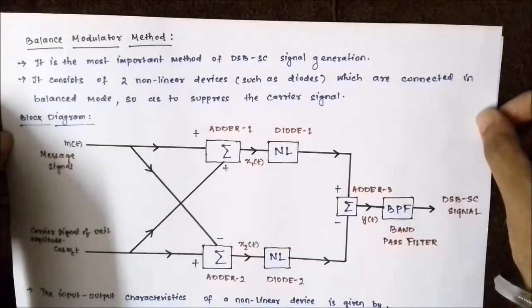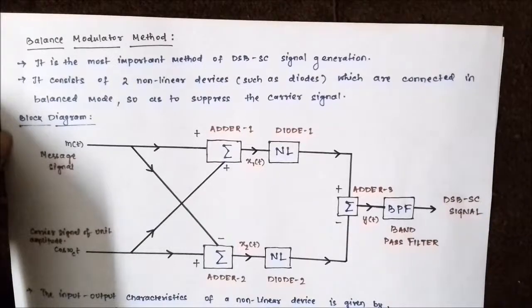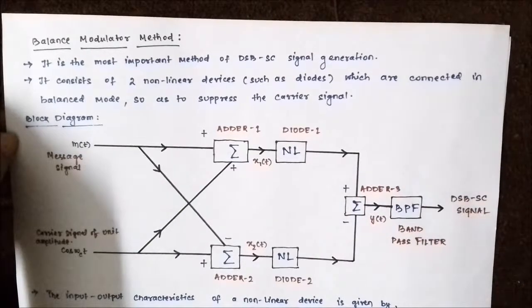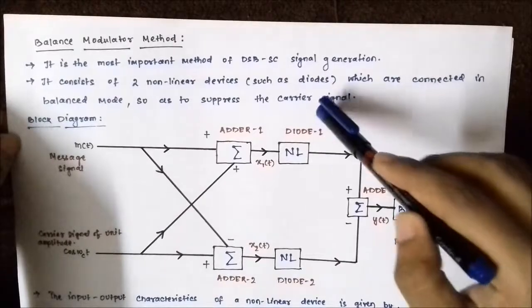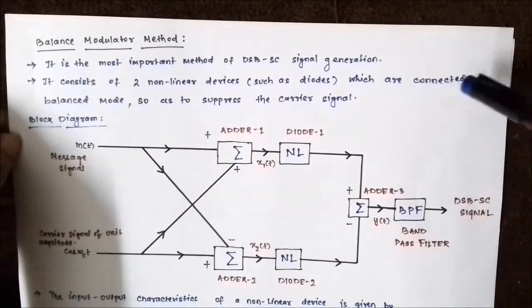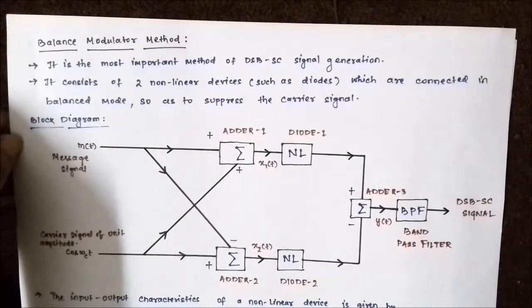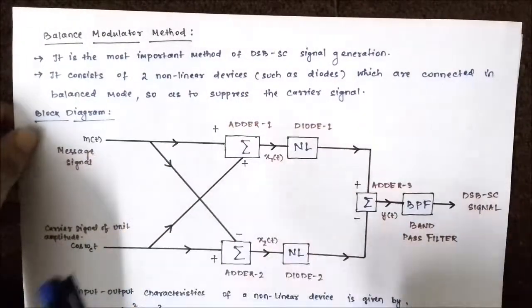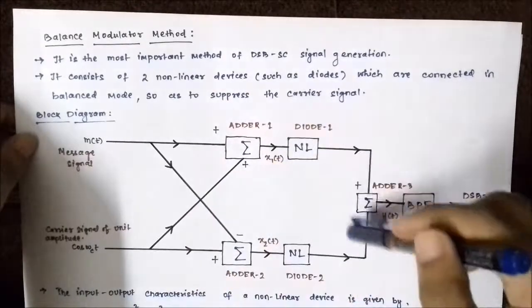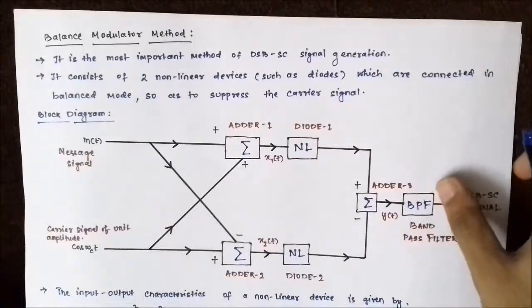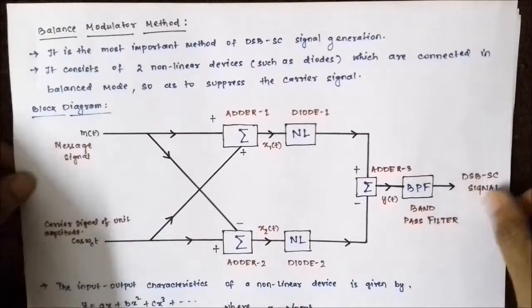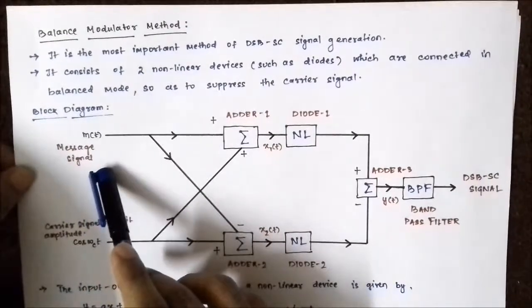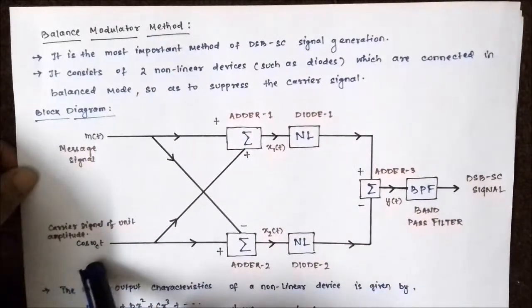The balanced modulator method is the most important method of DSBSC signal generation. It consists of nonlinear devices such as diodes or transistors — in this case, diodes are used, connected in balanced mode. Balanced mode means an even number of nonlinear devices are used. Here we have two diodes. This is the block diagram for the generation of DSBSC signal. One of the signals is the message signal m(t), and one is the carrier signal.